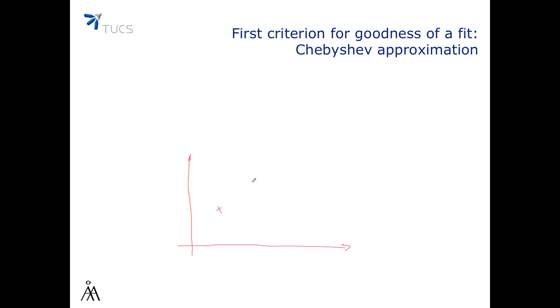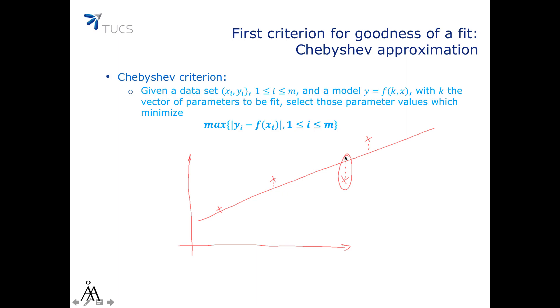The goodness of a fit measures how far a model is from a data set. Given a data set and a model, there will of course be some deviations of our model from the data points. The most intuitive way to minimize these deviations is to simply minimize the largest deviation, with the idea that if the largest deviation is made small then all other deviations will of course also be small. This is what's called the Chebyshev approximation — our first criterion for the goodness of a fit.